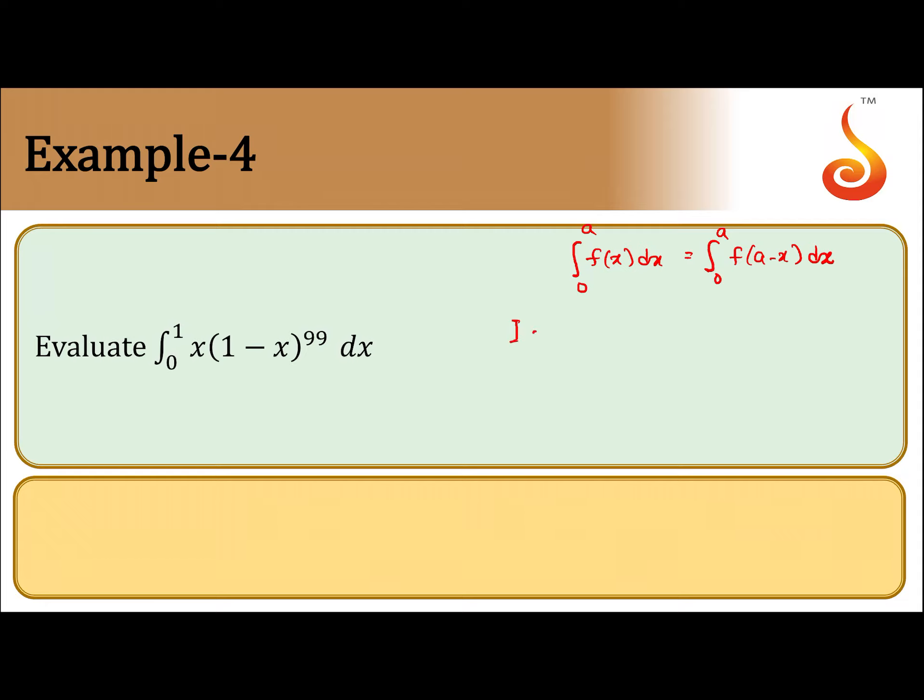So if we shift it, I is equal to integral from 0 to 1. This becomes (1 minus x) into (1 minus (1 minus x)) to the power 99 dx. So we get integral from 0 to 1 of (1 minus x) into x to the power 99 dx.